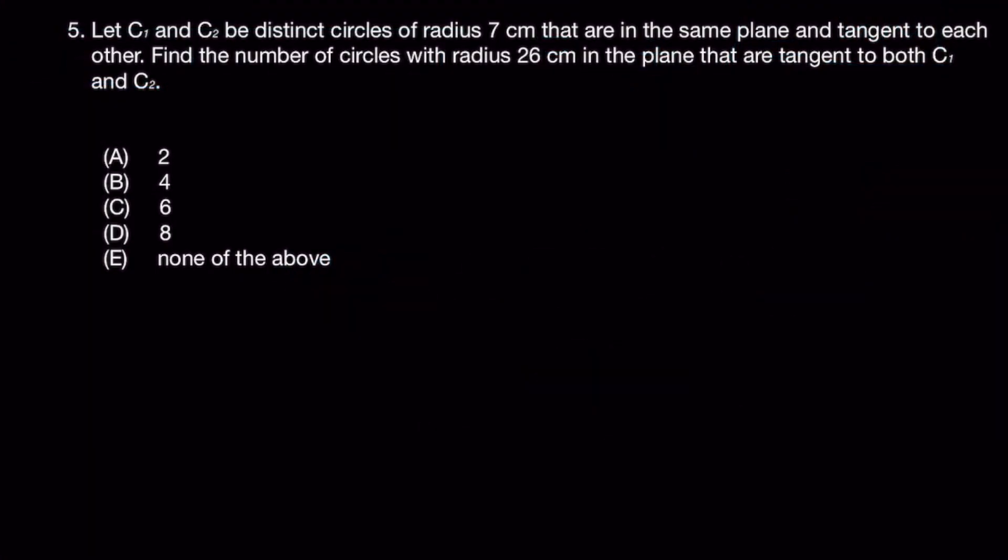Alright. Let's look at the last question. Question 5. Let C1 and C2 be distinct circles of radius 7cm. They are in the same plane and tangent to each other. Find the number of circles with radius 26cm in the plane. They are tangent to both C1 and C2.